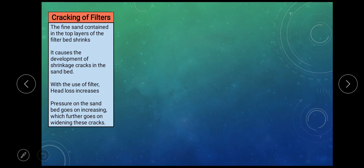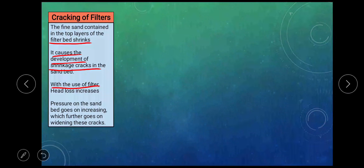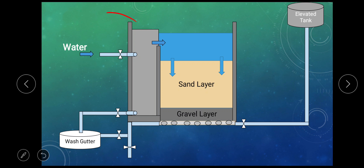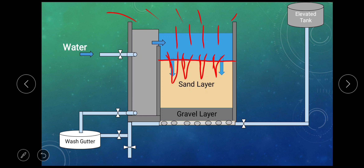Cracking of the filter: The fine sand contained in the top layer of the filter bed shrinks, causing shrinkage cracks on the sand bed. With use of the filter, head loss increases, which increases the pressure on the sand surface. This pressure will widen the cracks on the surface of the sand. Due to atmospheric conditions, the sand layer develops small cracks. With the passage of time, constant pressure from the top increases the thickness and width of these cracks. Due to this widening, all the impurities get penetrated into these cracks. As the depth and widening of cracks increases, impurities can easily be seen in the filter water.